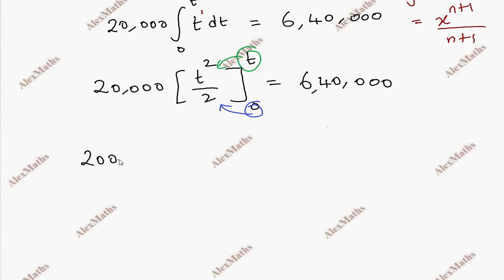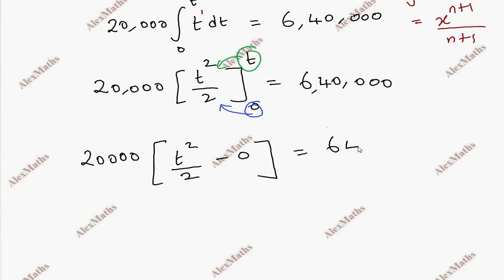The upper limit gives us 20,000 times t. The lower limit is t equal to 0, so t squared equals 0, making the lower limit term equal to 0. Therefore we cancel out the lower limit terms.